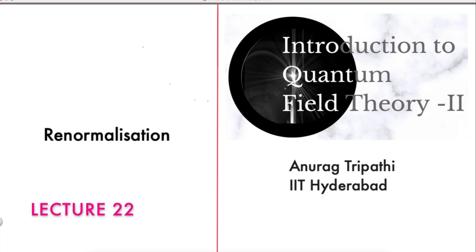We will now start talking about contributions to different observables that come from higher order corrections in quantum field theory. These involve Feynman diagrams that contain loops. The real content of quantum field theory resides in these loop diagrams.